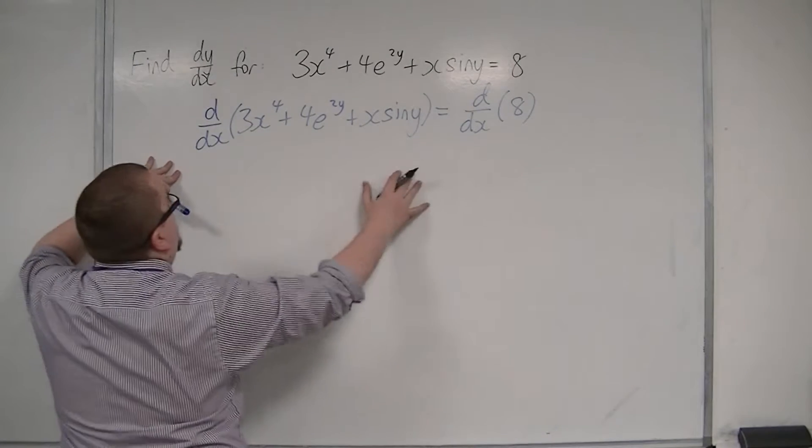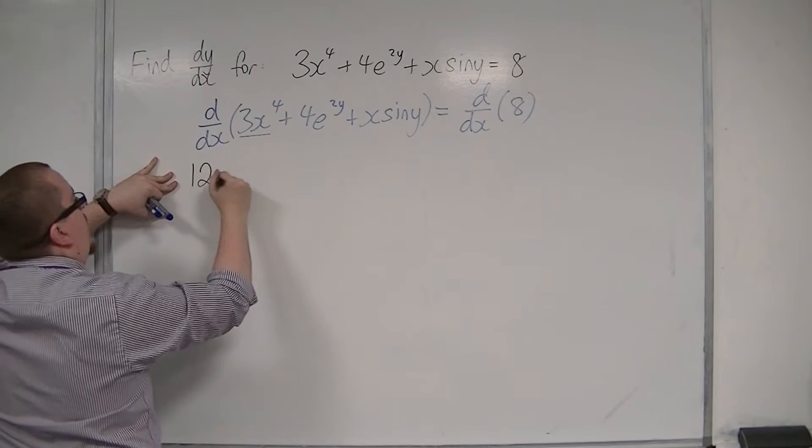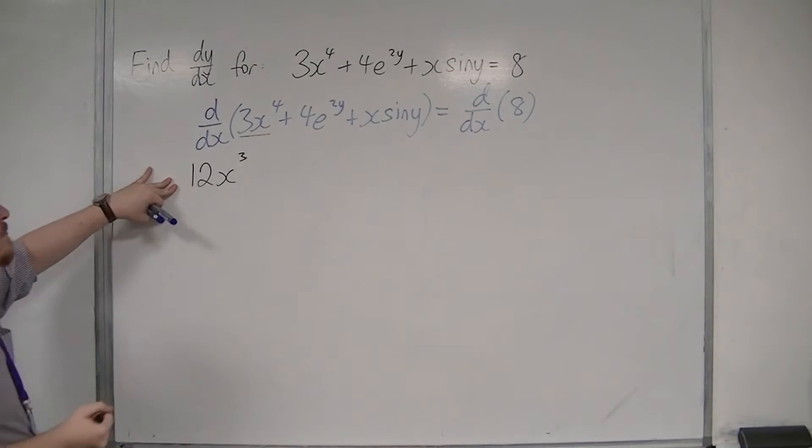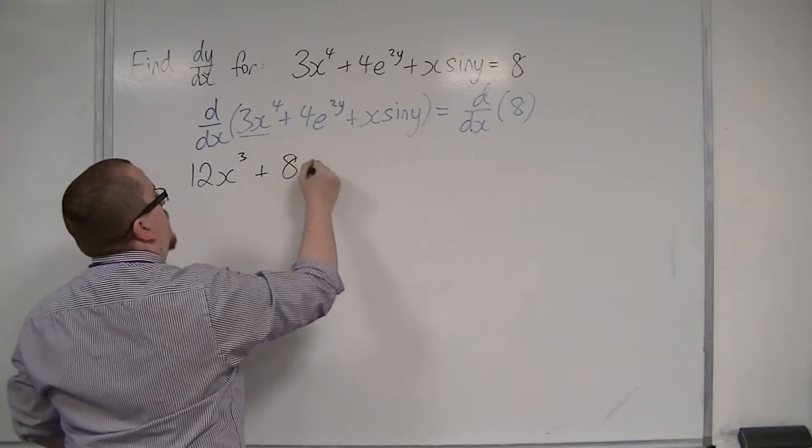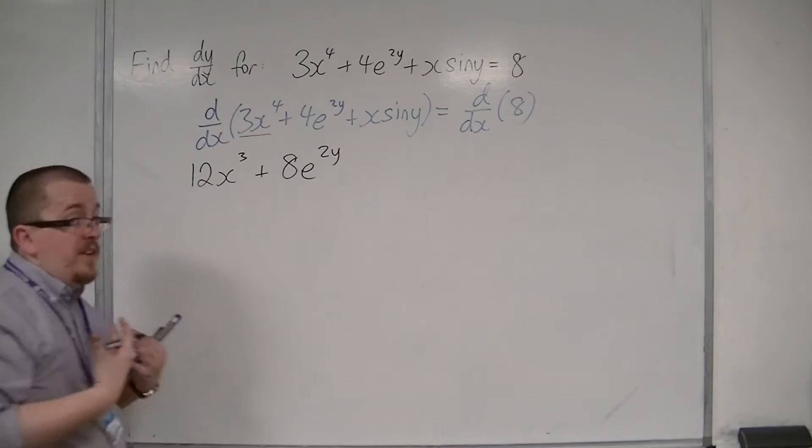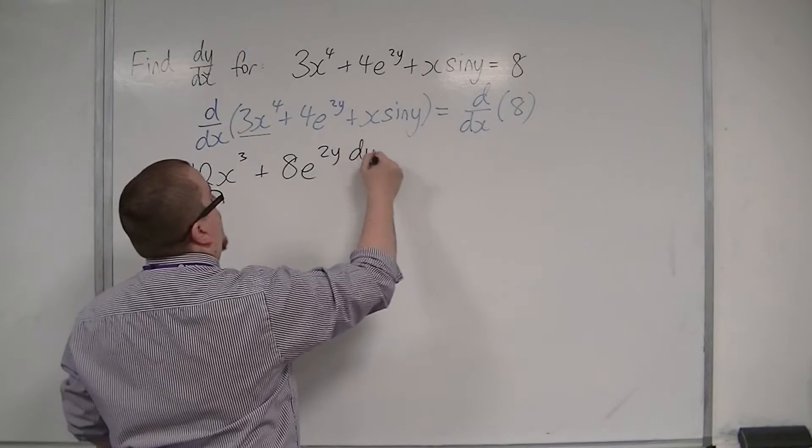So I'm going to differentiate each of these terms. So 3x to the 4 differentiates to 12x cubed, 4e to the 2y, the 2 comes down to the front, e to the 2y, and then because I've differentiated y with respect to x, there's going to be a dy by dx here.